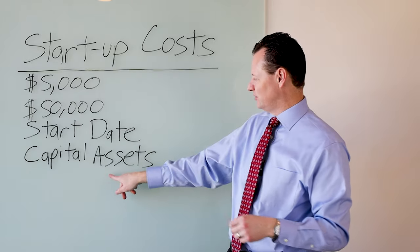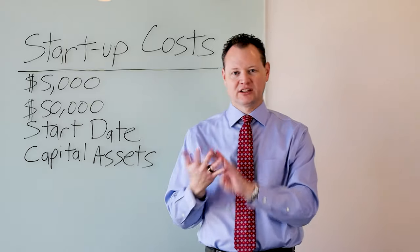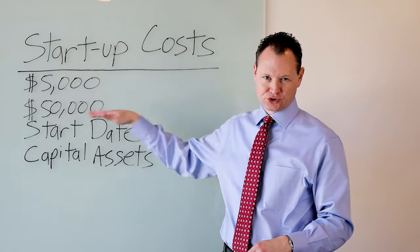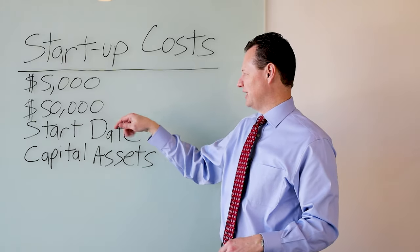And again, this $50,000 doesn't include capital assets or inventory and computers and all that other stuff is not included in the $50,000 number. That's just true operating expenses that we have there.